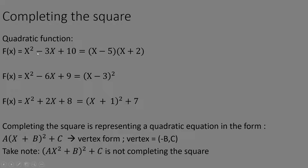Next up we have completing the square. Quadratic functions have x raised to the power of two. The first example is x squared minus 3x plus 10, which can be factorized. The next case, x squared minus 6x plus 9, can also be factorized. This has two roots; that has one repeated root.